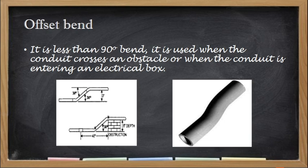The offset bend is less than 90 degrees. Whatever type of bend which is less than 90 degrees is called an offset bend. It is used when the conduit crosses an obstacle or when the conduit is entering an electrical box. A very common use of an offset bend is connecting our conduit into a junction box, utility box, or pull box.